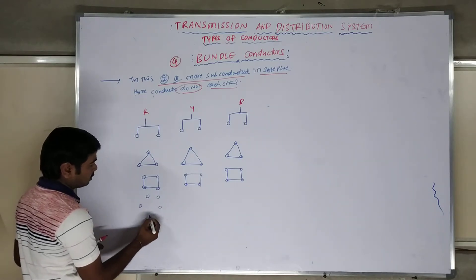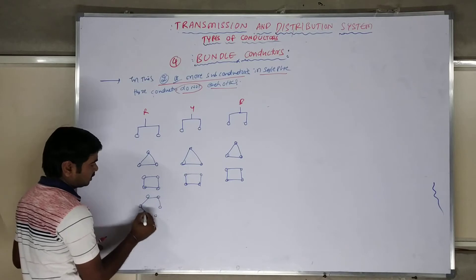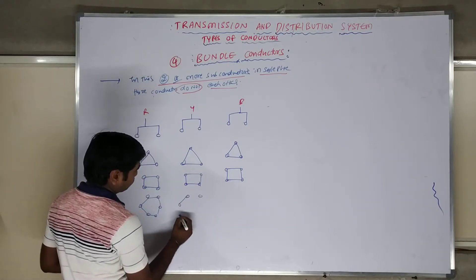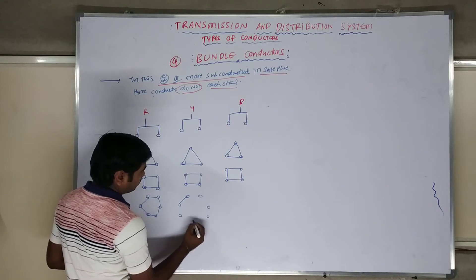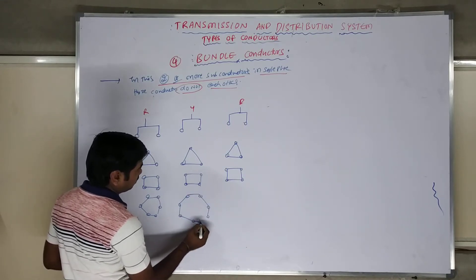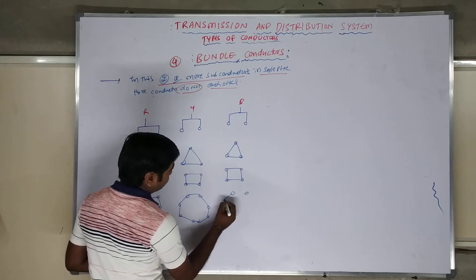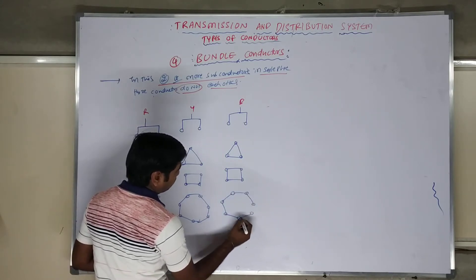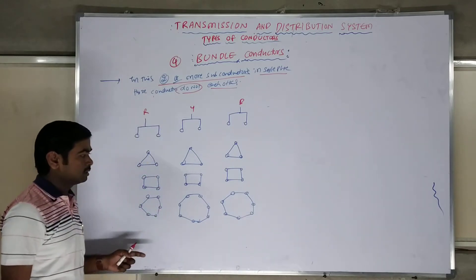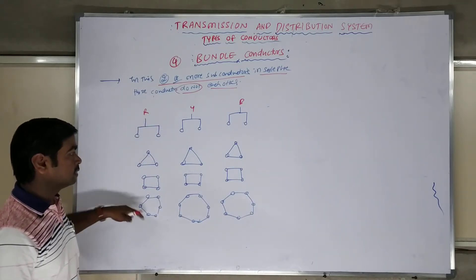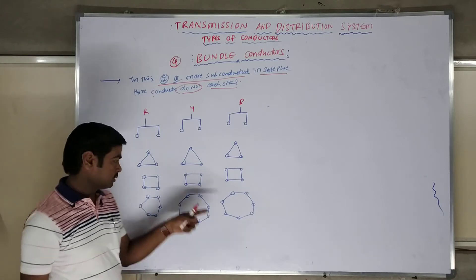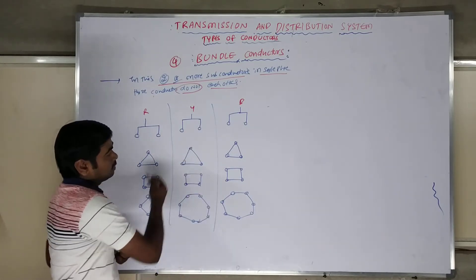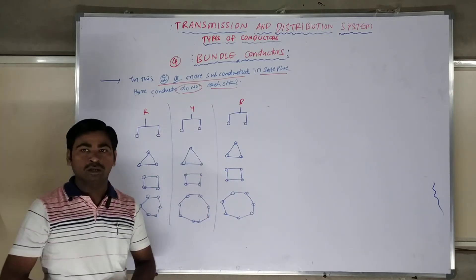There are also six and eight sub-conductor configurations. You can observe a hexagonal system and an octagonal system on transmission towers. So the different arrangements are: two, three, four, six, and more sub-conductors per phase. Such a system where each single phase has multiple sub-conductors is called a bundled conductor.